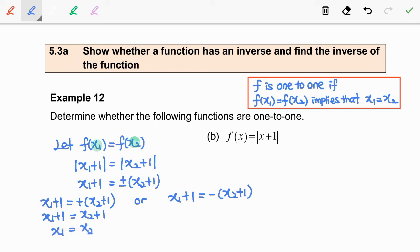And the second one is x1 plus 1 equal to negative x2 minus 1. So x1 is equal to negative x2 minus 2.